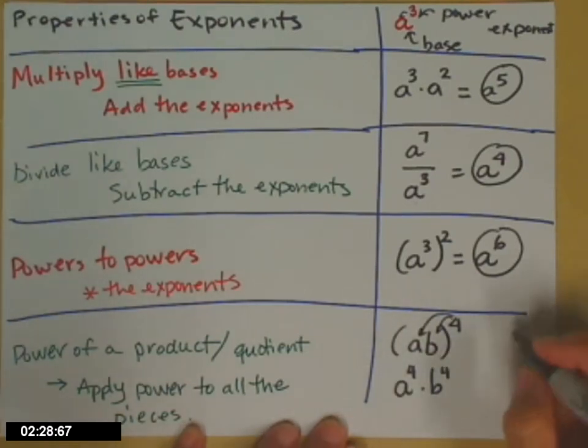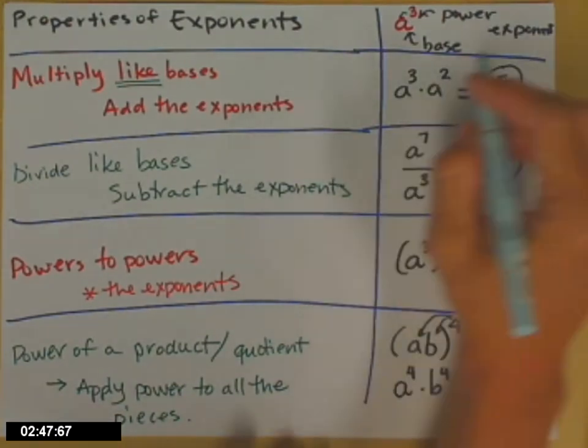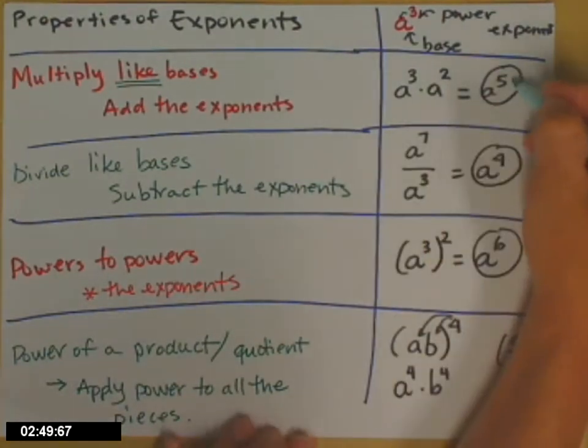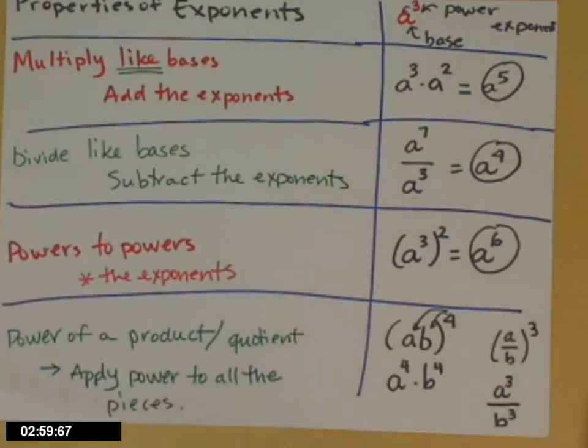It also works for a quotient. So, if I would have a over b to the 3rd, I can rewrite that as a to the 3rd divided by b to the 3rd. Be very careful with your notation at this point. Notice that I've tried, and I'm using a marker, so it's a little bit harder. The 5 is a power. It is not the same thing as 5 times a. The 4 is an exponent. Not the same thing as 4 times a. So, make sure that you can tell on your writing if it's an exponent or if it's a coefficient.